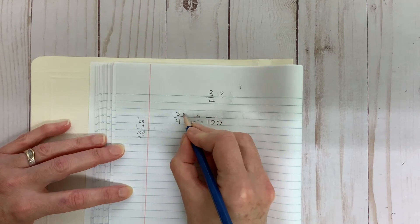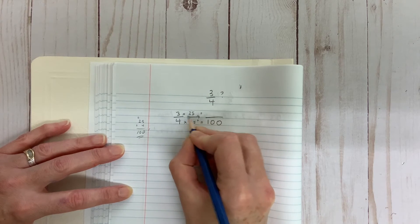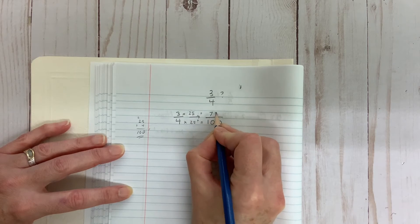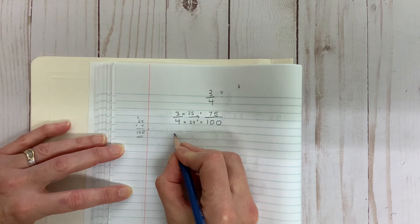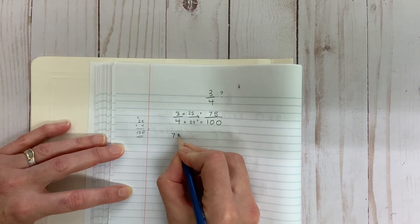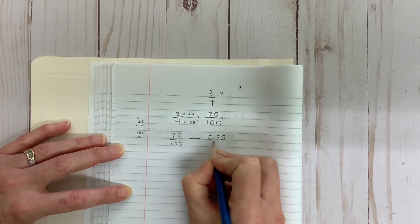Now, I just need to also multiply my numerator by twenty-five. And, there I have it. Three-quarters is equivalent to seventy-five hundredths. And now, we can easily represent this as a decimal. Seventy-five hundredths can be written as zero point seven five.